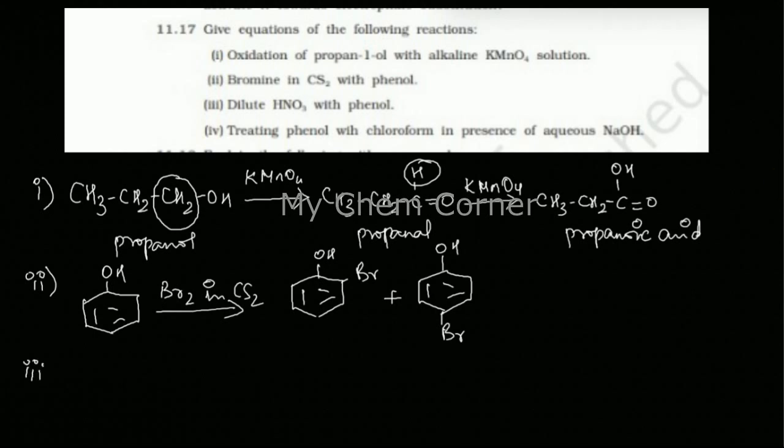Then third one is dilute HNO3 with phenol. Again, same thing here. Since the solution is dilute, you will form ortho and para directing groups. Here also, the electrophile in this case is NO2, so you will form ortho-nitrophenol and para-nitrophenol.